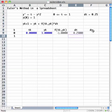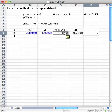And the first value of dy, change in y, is going to be f of tk, yk times change in time.